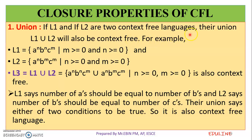The next topic is closure properties of context-free languages. One property is union. If L1 and L2 are two context-free languages, their union will also be context-free. For example, L1 equals a raised to n, b raised to n, c raised to m.